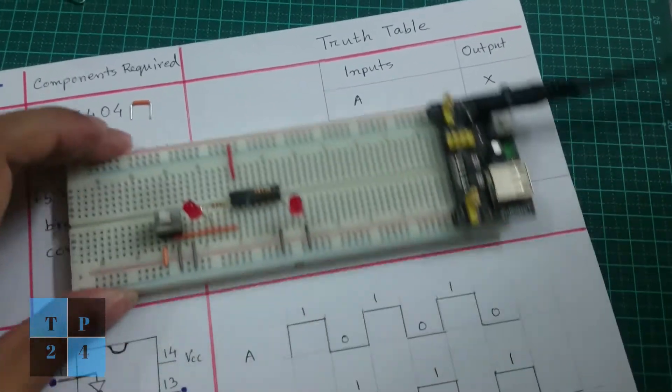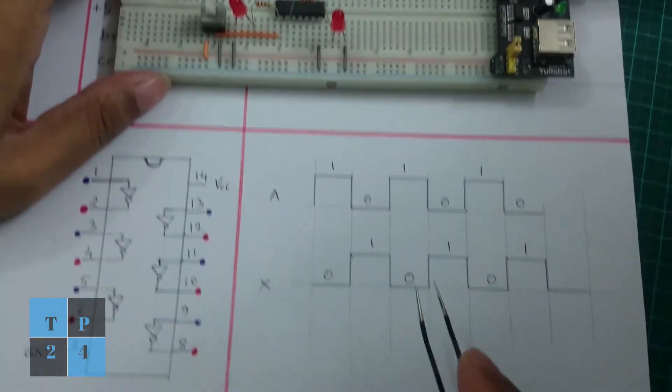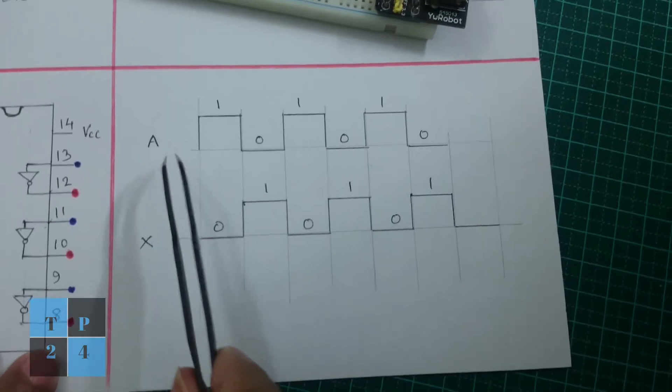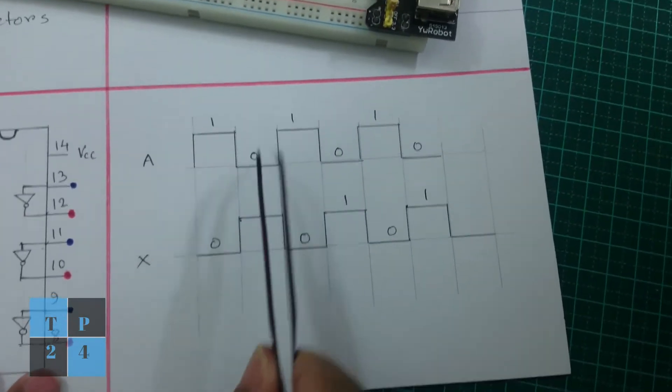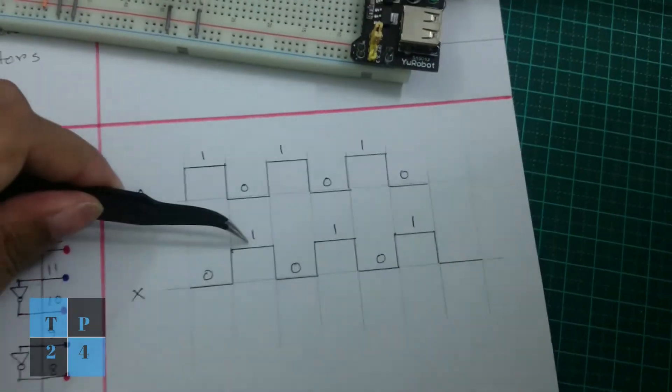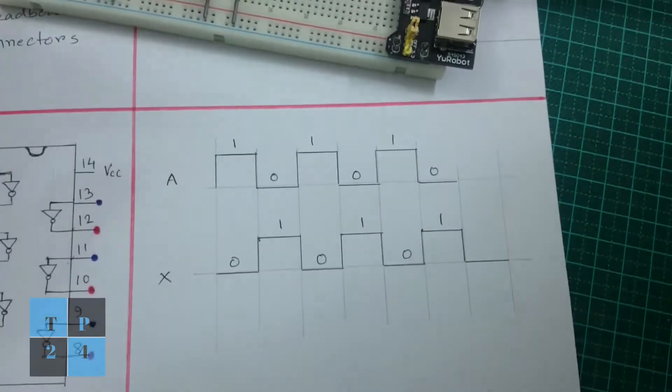If I focus on the pulse waveform, we can see as input if I take this waveform 101010, we can get output 010101.